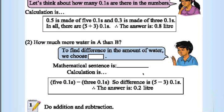How much more water is in A than B? 5 minus 3 is 2. Two 0.1's are 0.2. The answer is 0.2.